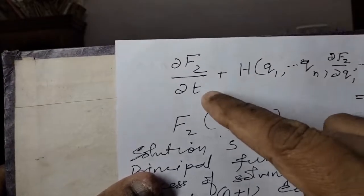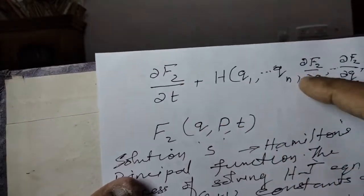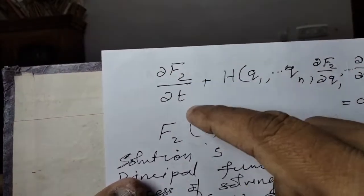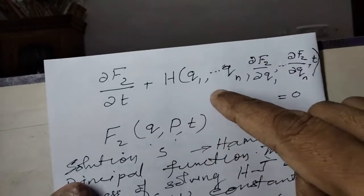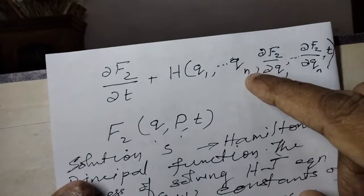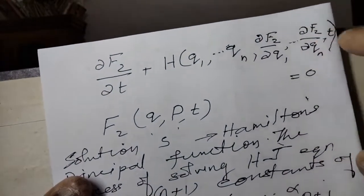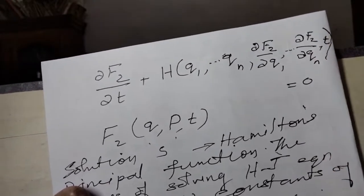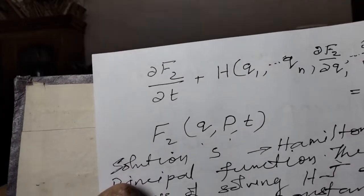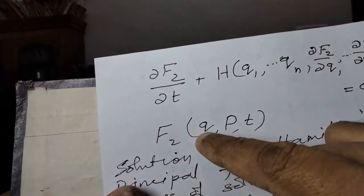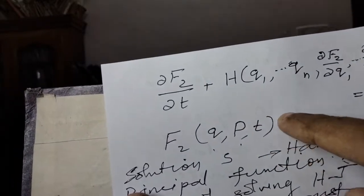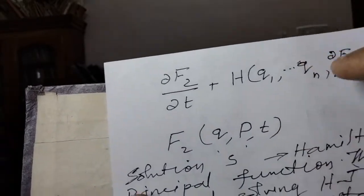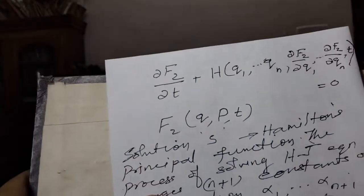We will go to the Hamilton-Jacobi equation, which is a partial differential equation. Now: ∂F2/∂t + H, which is a function of q1, q2, ..., qn, ∂F2/∂q1, ..., ∂F2/∂qn, t equals zero. So F2, which is a function of q, P, t, is a generating function, and it forms the Hamilton-Jacobi equation.